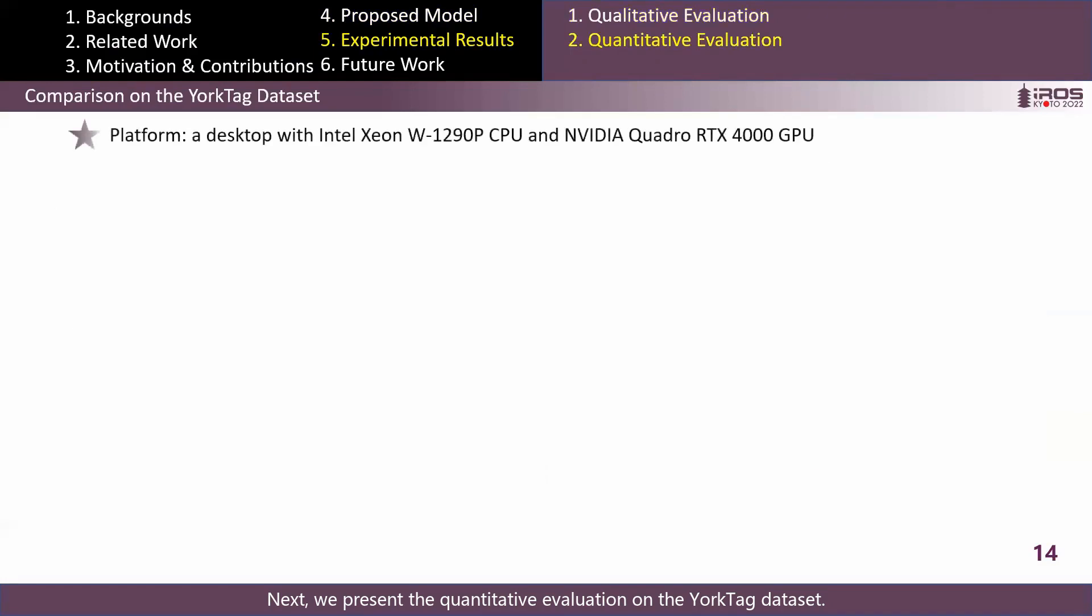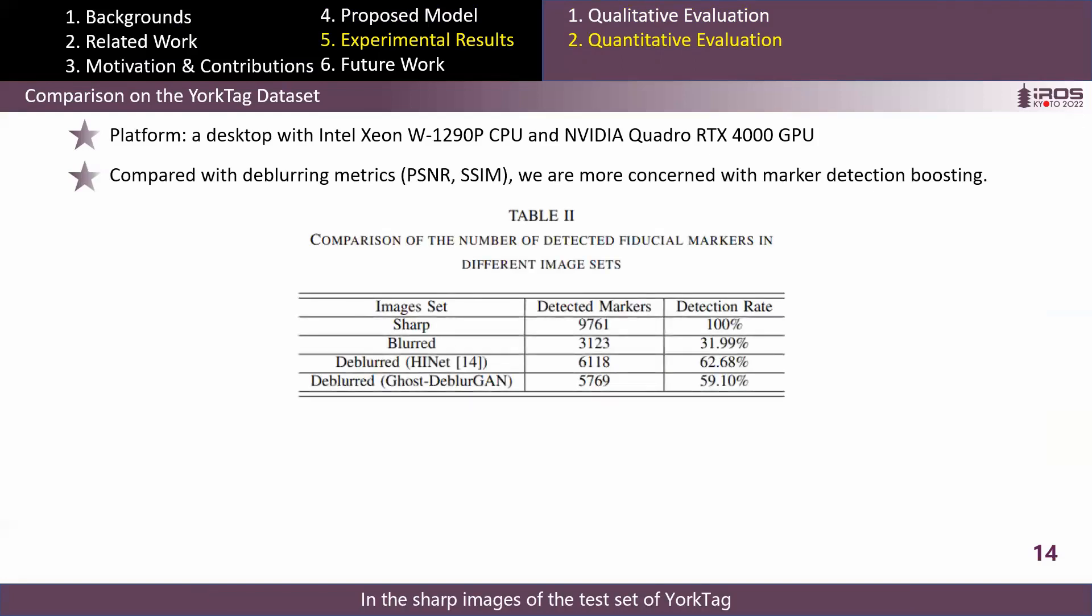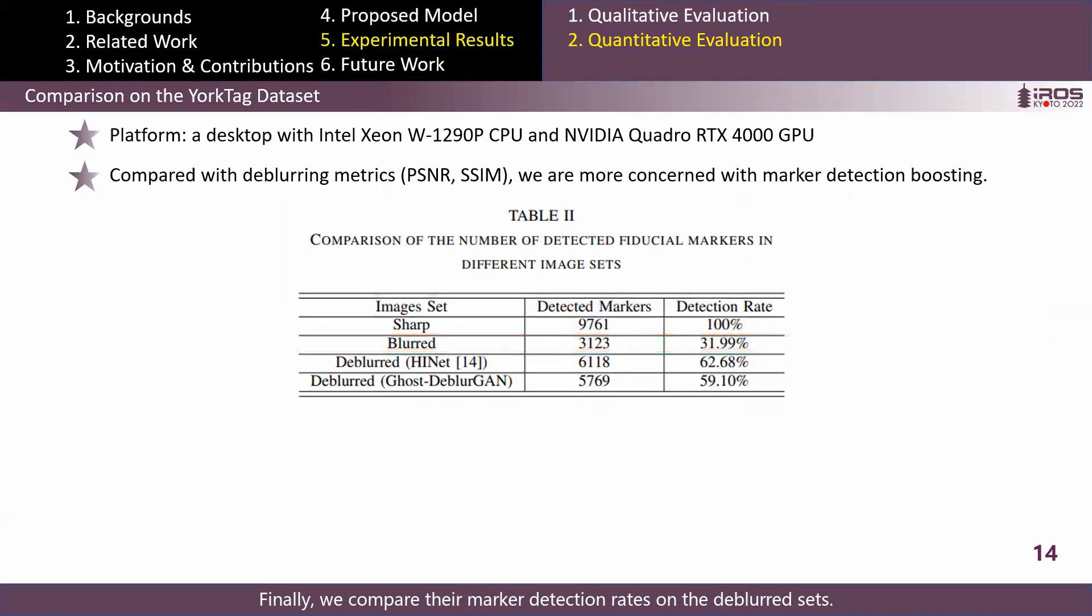Next, we present the quantitative evaluation on the YorkTag dataset. This is the platform used for the comparison. In fact, we are more concerned with marker detection rate rather than deblurring metrics, so we conducted the following experiment. In the sharp images of the test set of YorkTag, we take the number of detected markers as the ground truth. Then, HINet and the proposed model are respectively applied to the blurred images of the test set to obtain the deblurred sets. Finally, we compare their marker detection rates on the deblurred sets.